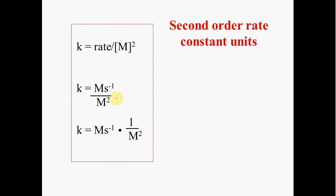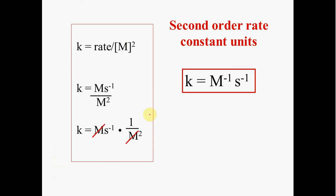For a second order reaction, you have rate — which is molarity per second — divided by molarity squared. You cancel one molarity and end up with molarity negative one second negative one, which is essentially one over molarity times one over time.